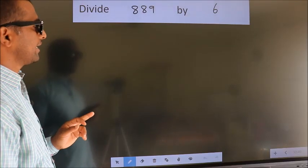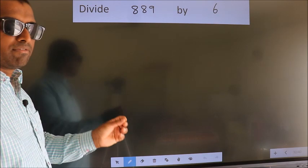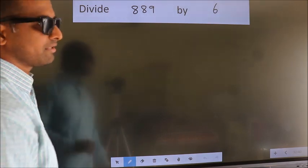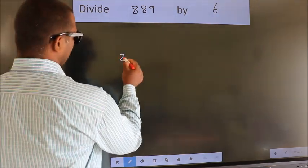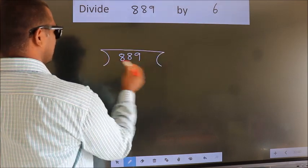Divide 889 by 6. To do this division, we should frame it in this way: 889 here, 6 here.